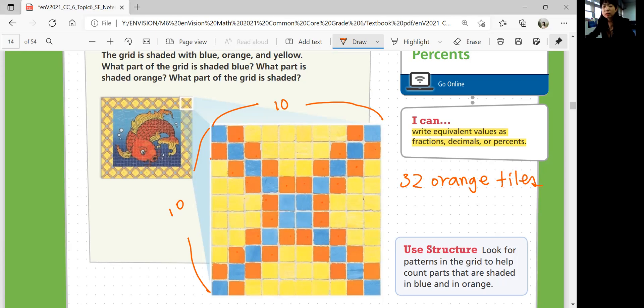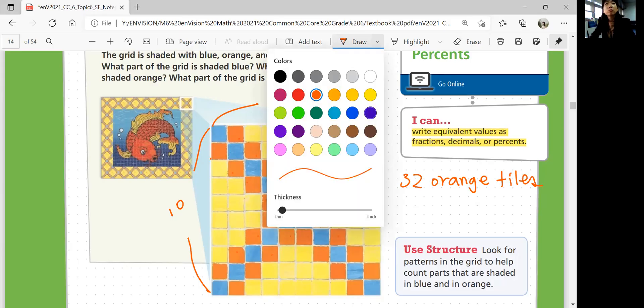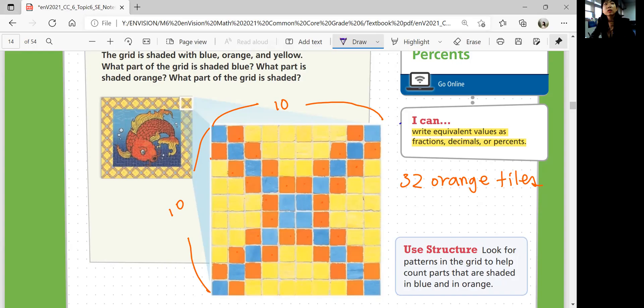And how many blue tiles? 1, 2, 3, 4, 5, 6, 7, 8, 9, 10, 11, 12, 13, 14, 15, 16, 17, 18, 19, 20. 20 blue tiles.